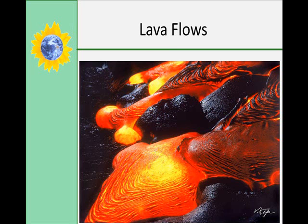A volcanic eruption dominated by passive outpouring of lava onto the earth's surface is called an effusive eruption. This happens either because there is not enough gas or volatiles in the magma to break it apart, or the magma is too viscous or sticky to allow the volatiles to escape quickly. Remember that molten rock is called magma when it is underneath the ground and lava when it is erupted onto the surface.